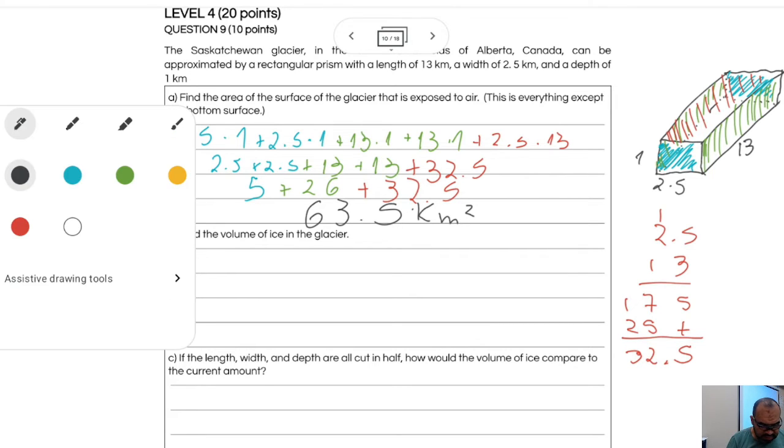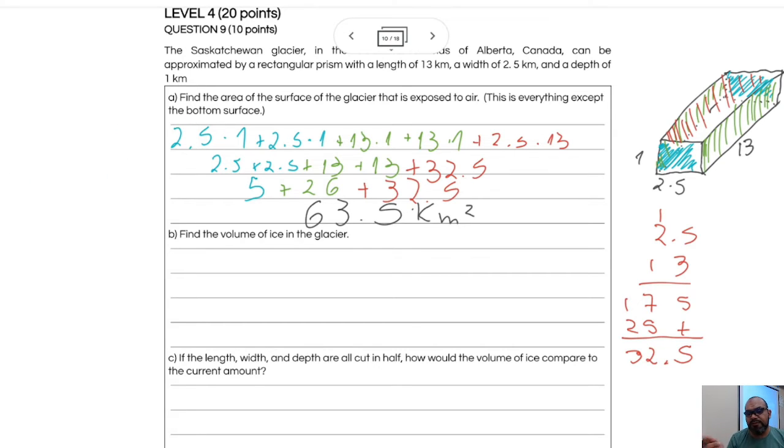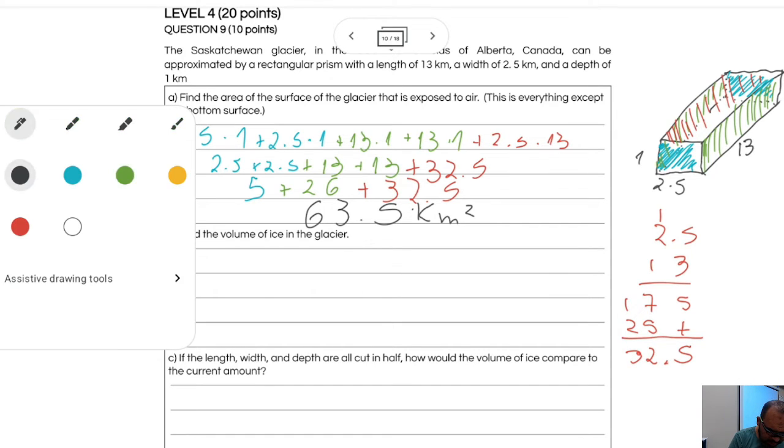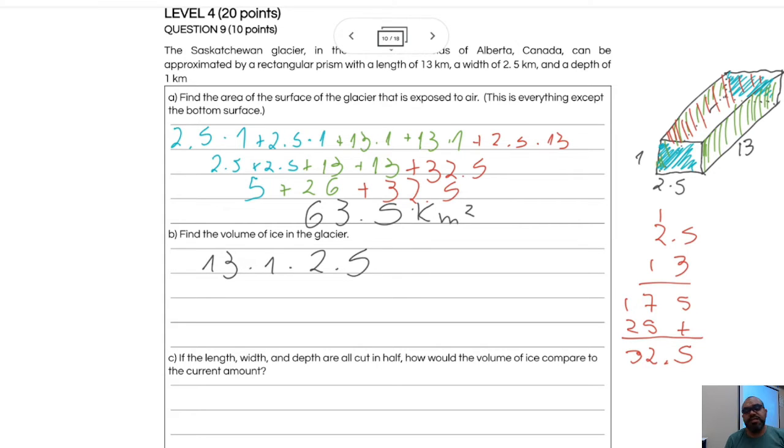Right now the volume. The volume is pretty simple. Remember length times width times height. We know it is 13 times 1 times 2.5. 13 times 1 is 13. 13 times 2.5. Oh, we have this already. It is 32.5 cubic kilometers, cubic kilometers because it's volume.